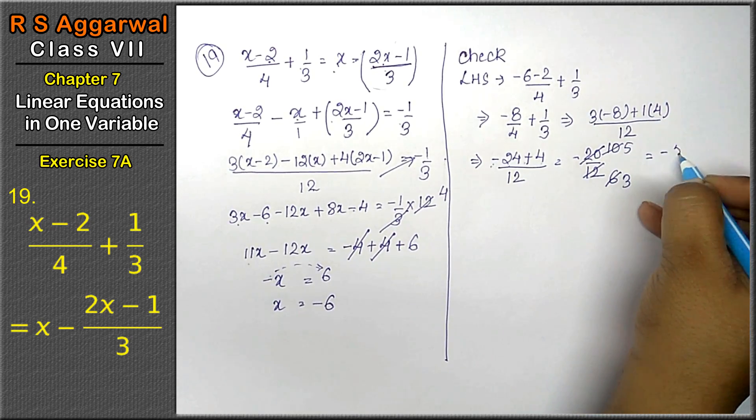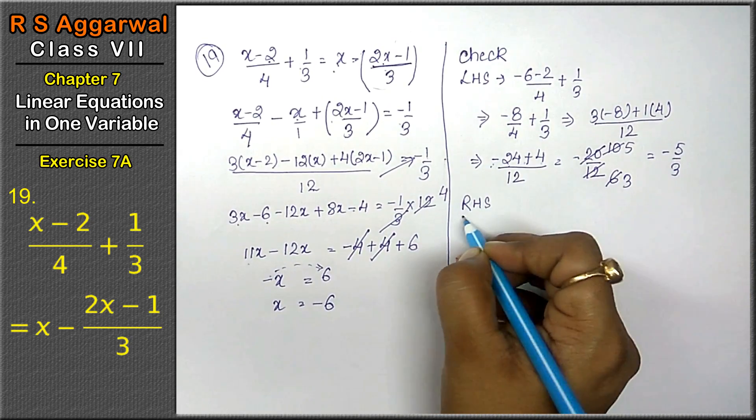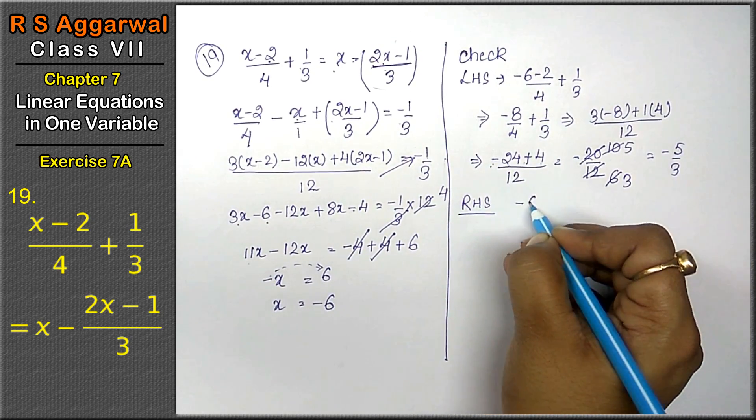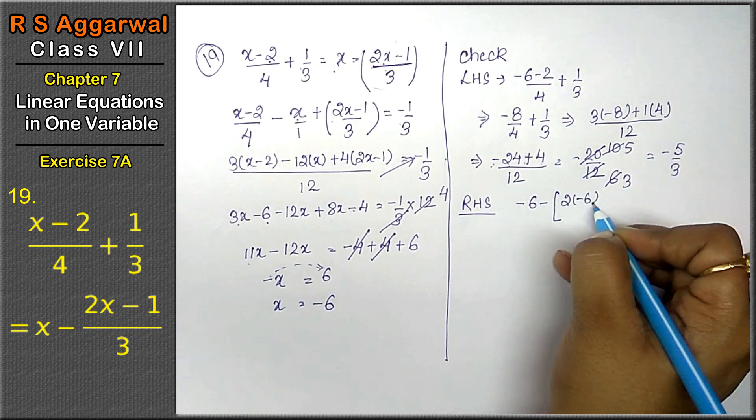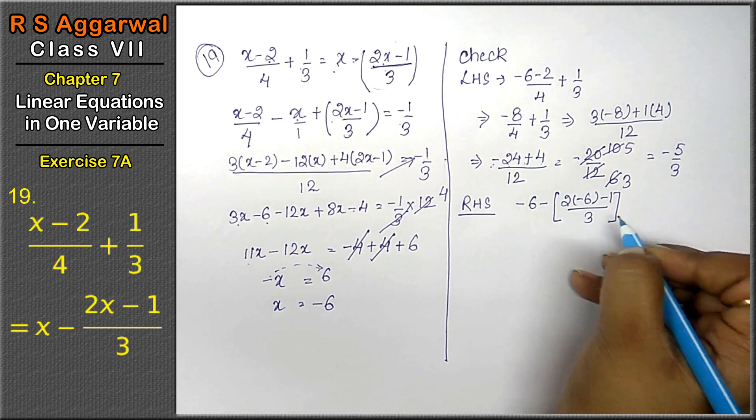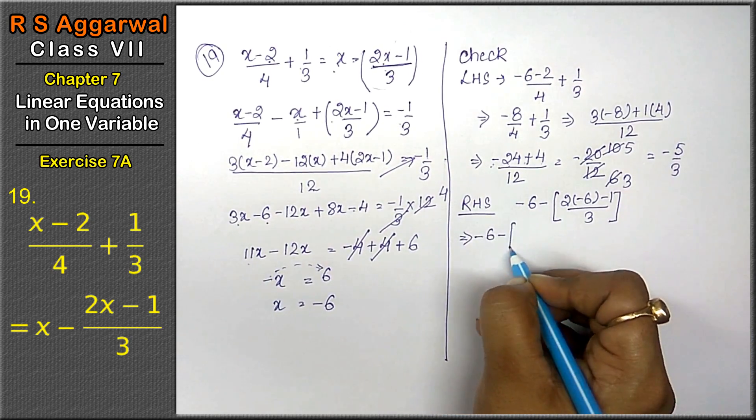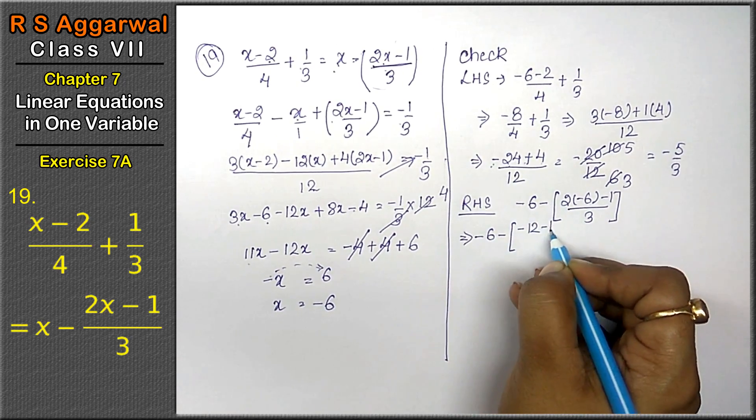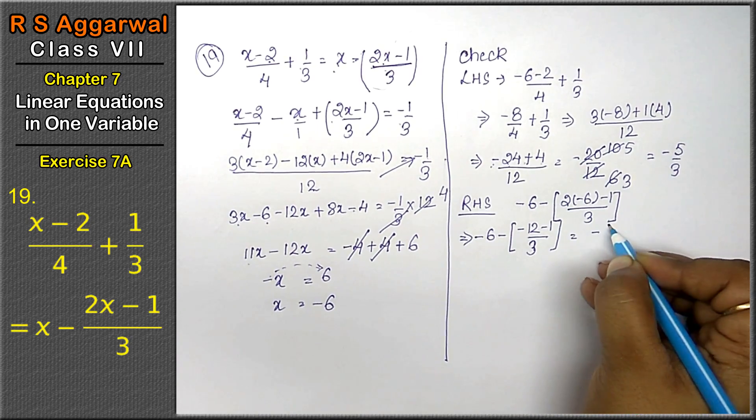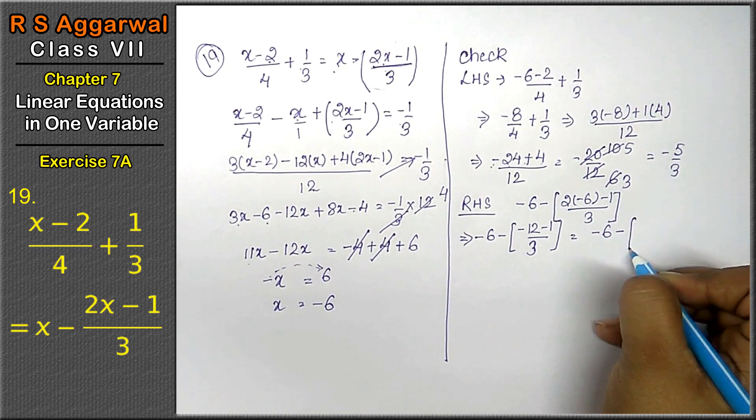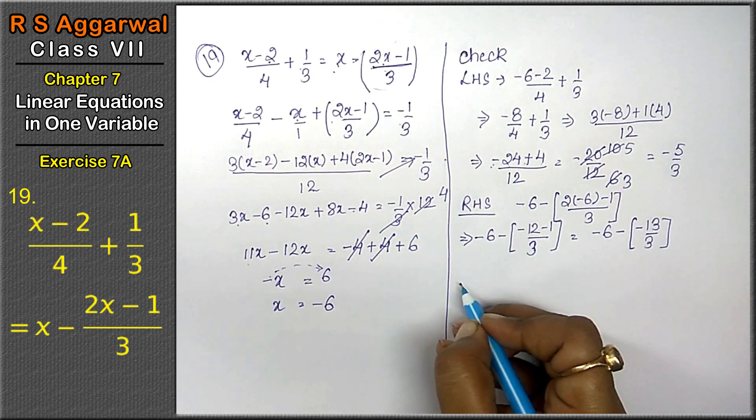Simplifying: -20/12 = -5/3. Now check the right-hand side: -6 - (2×-6 - 1)/3 = -6 - (-12-1)/3 = -6 - (-13)/3.